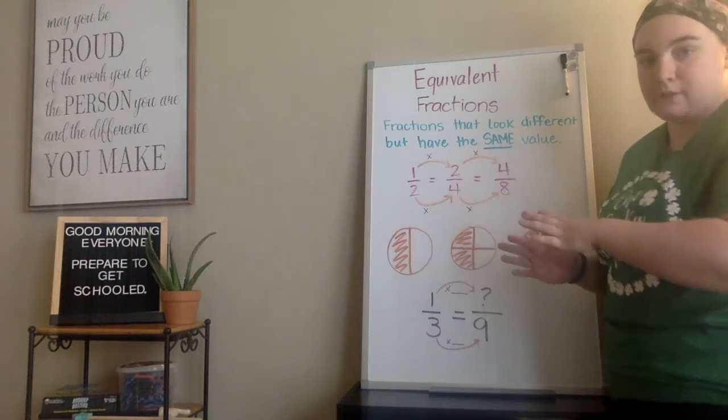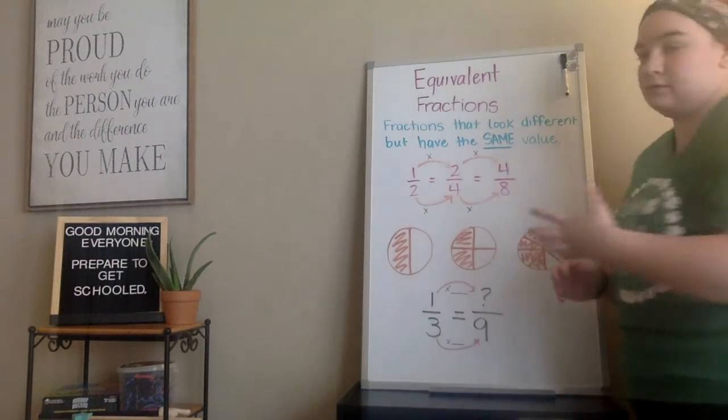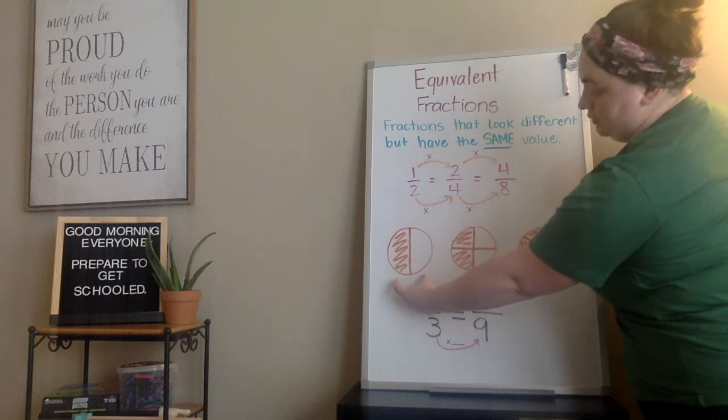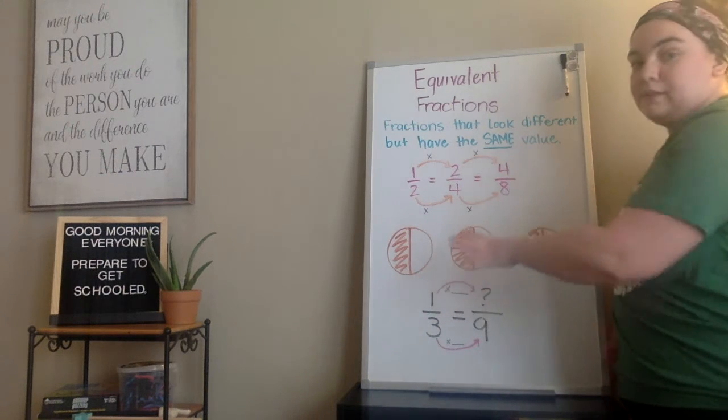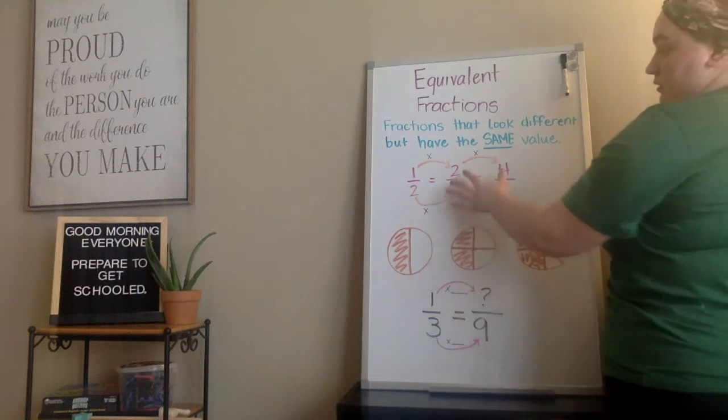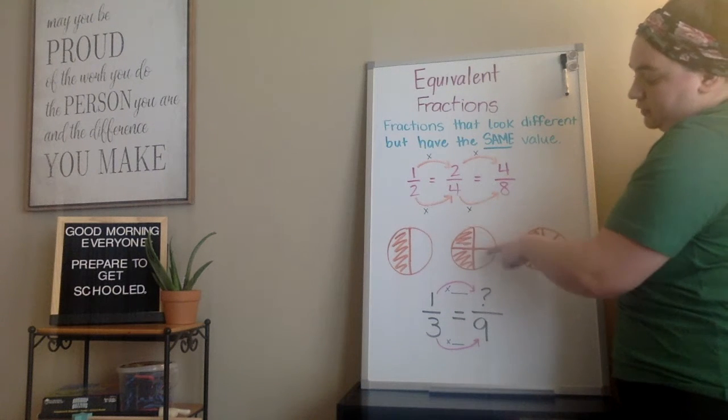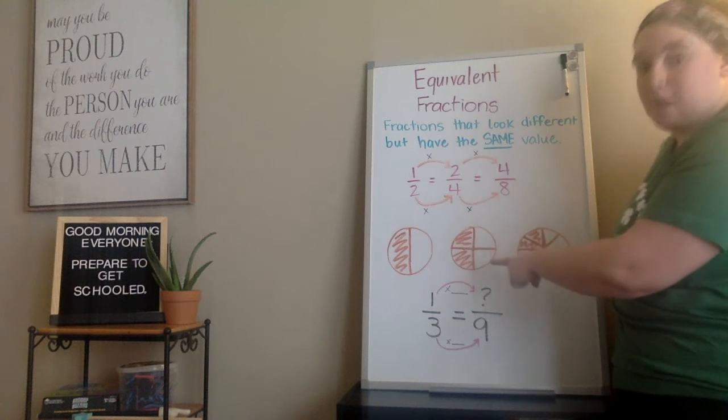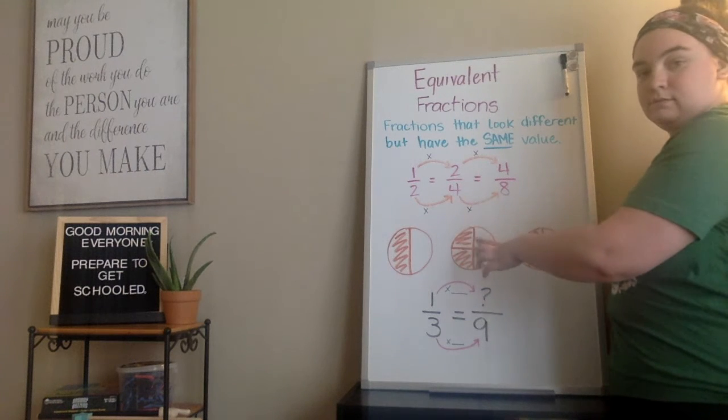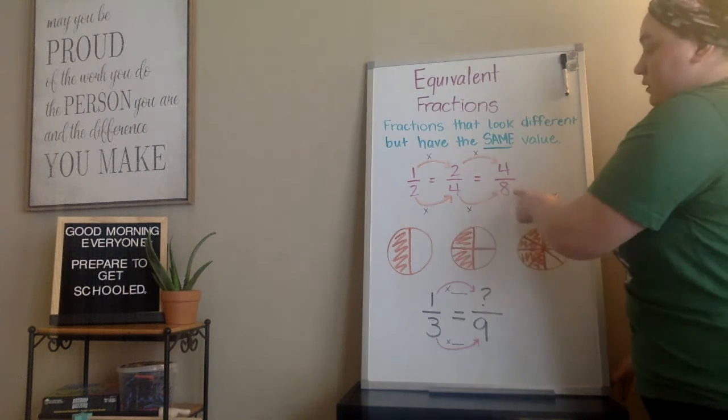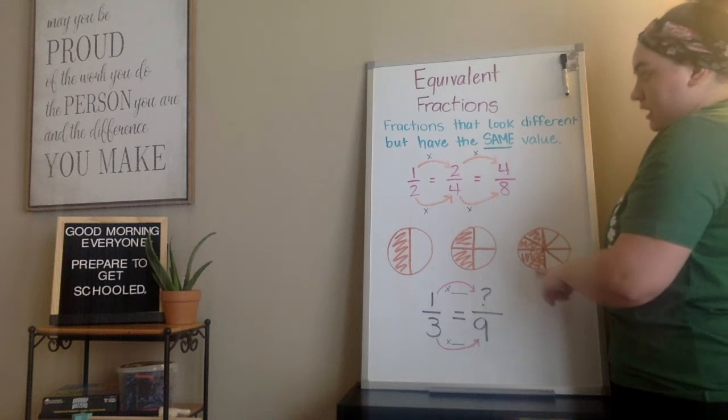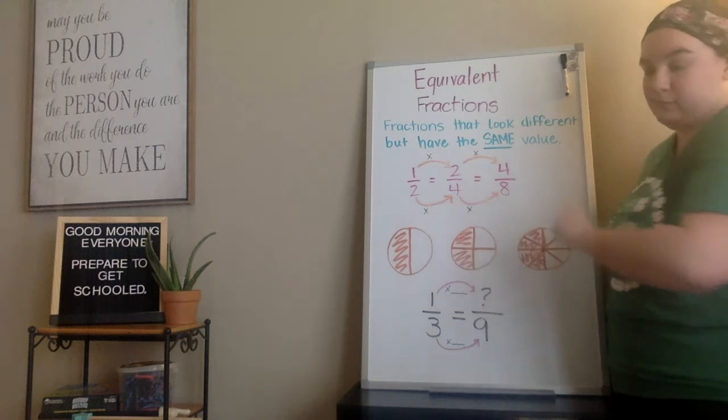So fractions that look different, but have the same value are equivalent. If we start with one half, the top is the numerator. That's one part out of two equal sections. So if I have two equal sections of my circle and I'm representing one by being colored in, that's one half. But what if I wanted to show one half differently? I could do that with a fourth. Two fourths is the same as one half, because if I split my circle into four pieces and represent two of them by coloring them in, they look the same where they're colored in, but they have different sections. Does that make sense?